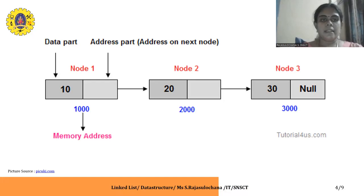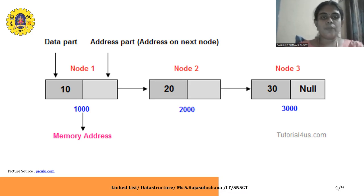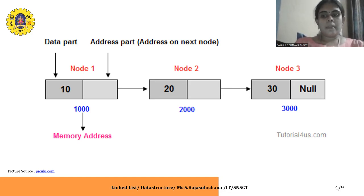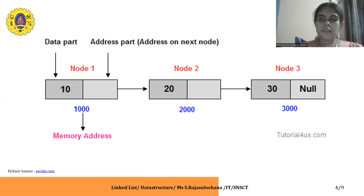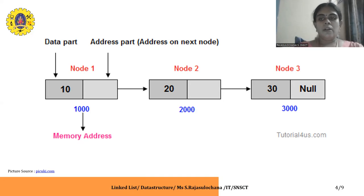Here is a best example for linked list. Each rectangular box depicts a node. As I said, each node will consist of two fields: one data field and one pointer field. Here, 1000, 2000, and 3000 represent the memory addresses of each node — these are specified just for your understanding. 10, 20, and 30 are the data values: 10 is the data value of node 1, 20 of node 2, and 30 of node 3. If you look at node 3, the pointer field is marked as null, which means it marks the end of the list. In a linked list, the last node will always have the pointer field with the value null because there is no more node in that linked list. The pointer field of the last node will always be null. The first node is always referred to as the header node.